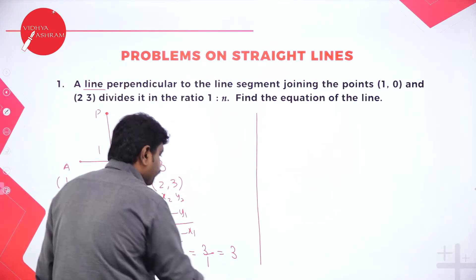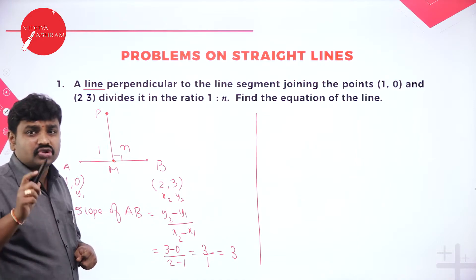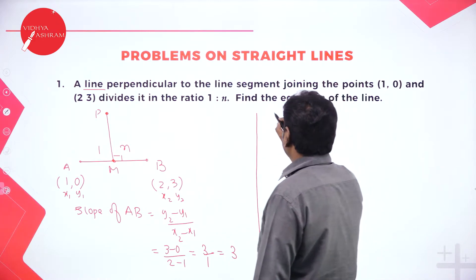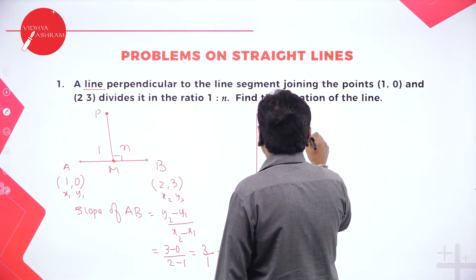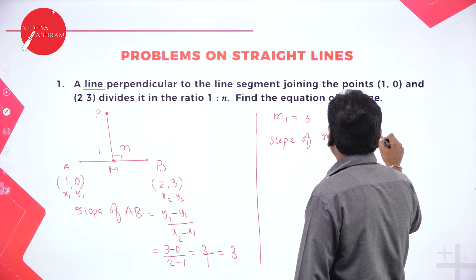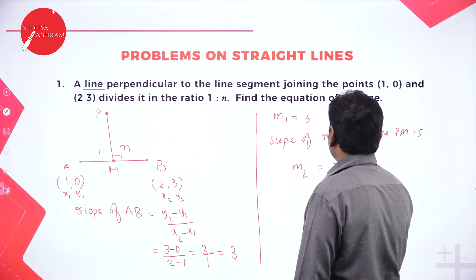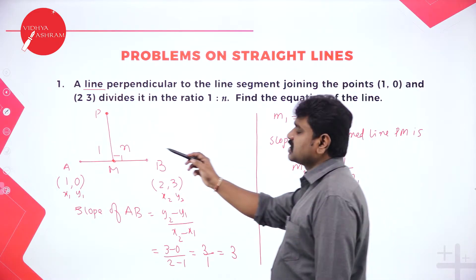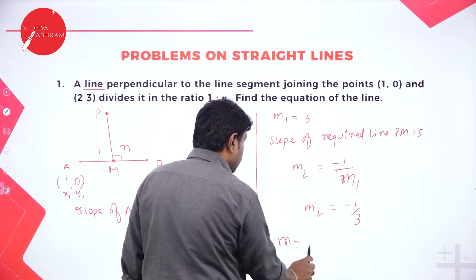We call slope of AB as M1, so M1 is 3. Now, slope of the required line PM is M2, which equals minus 1 by M1, that is minus 1 by 3. This is the slope of the required line. So M equals minus 1 by 3.